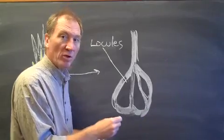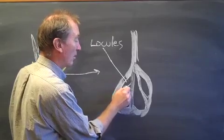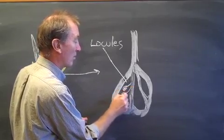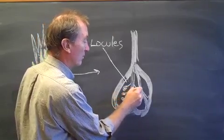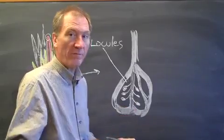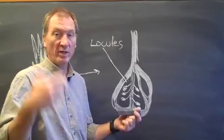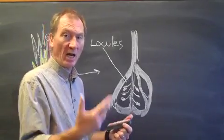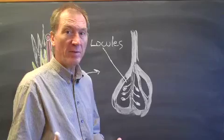Inside the chambers are ovules. And these ovules are where the female gametes are housed, and are awaiting the pollen that's going to come down the stigma and style, and fertilize the female gamete.